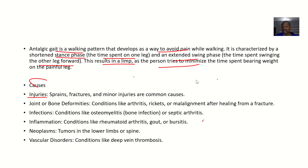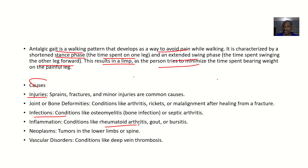It could be due to joint or bone deformities — conditions like arthritis, rickets, or malalignments after healing from a fracture. Infections such as osteomyelitis, which is bone infection, and septic arthritis can all cause it. Inflammations like rheumatoid arthritis, gout, and bursitis can also cause it. Neoplasms — tumors in the lower limb or spine — and vascular disorders like deep vein thrombosis can also cause antalgic gait.